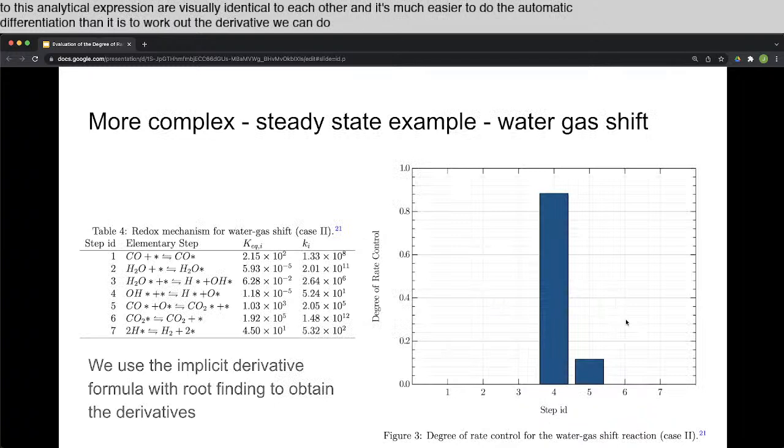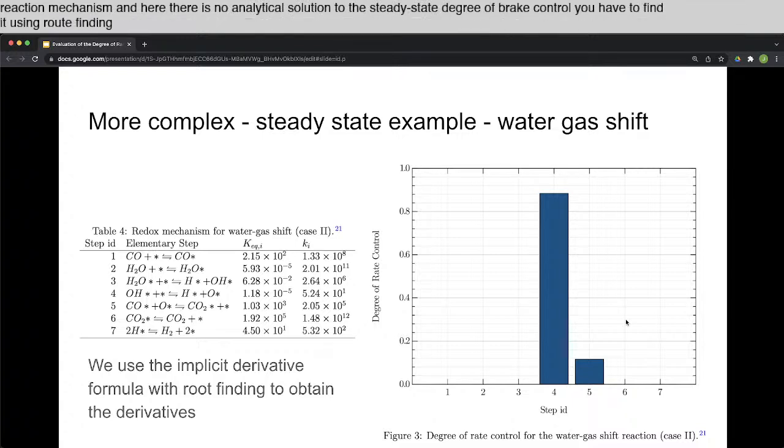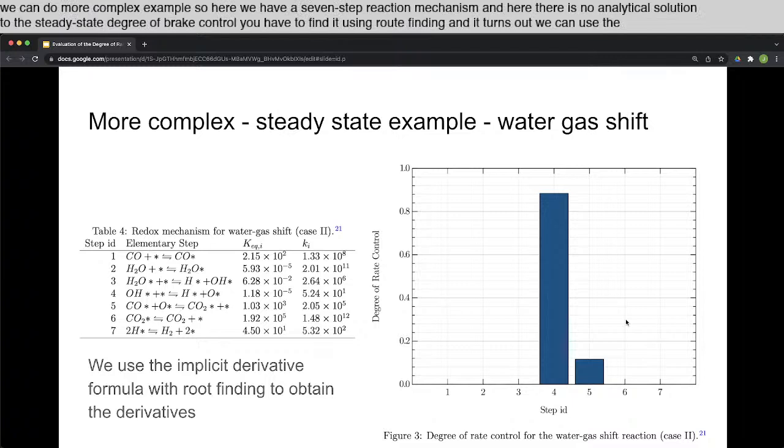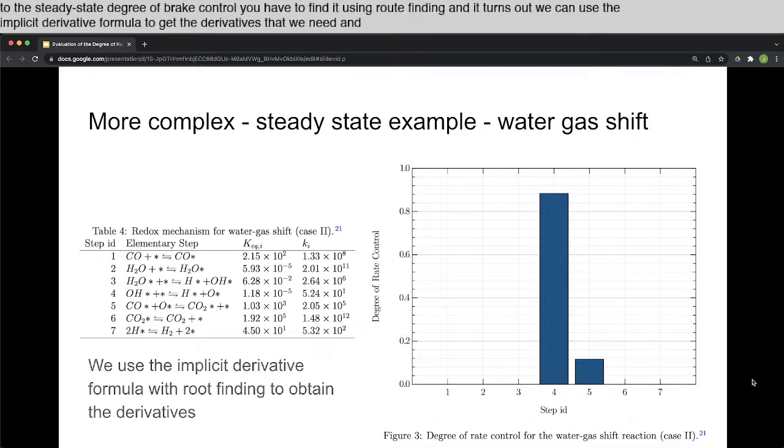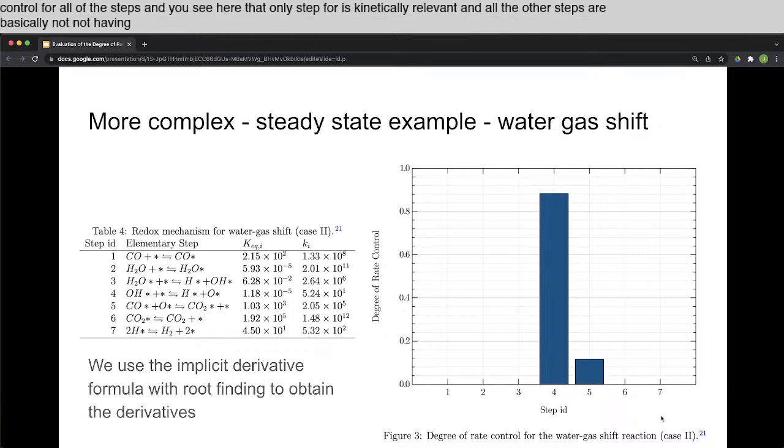We can do more complex examples. So here we have a seven-step reaction mechanism, and here there is no analytical solution to the steady state degree of rate control. You have to find it using root finding. And it turns out we can use the implicit derivative formula to get the derivatives that we need, and we're readily able to calculate the degree of rate control for all of these steps. And you see here that only step four is kinetically relevant, and all the other steps are basically not having an effect on the overall rate.